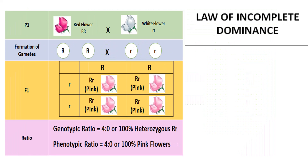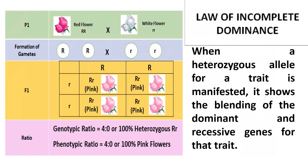The above-mentioned mechanism is explained by incomplete dominance, which states that in some organisms, when a heterozygous allele for a trait is manifested, it shows the blending of the dominant and recessive gene for that trait. In incomplete dominance, it is only the phenotype that is intermediate. The red and white alleles remain separate and distinct. Half the gametes of the pink flower carry the allele for red and half carry the allele for white.